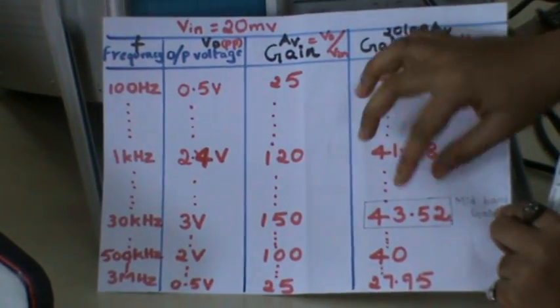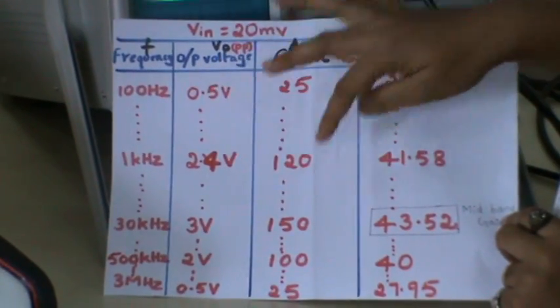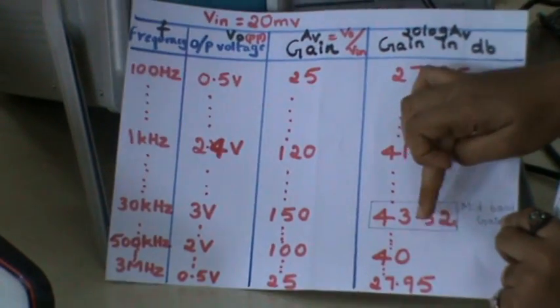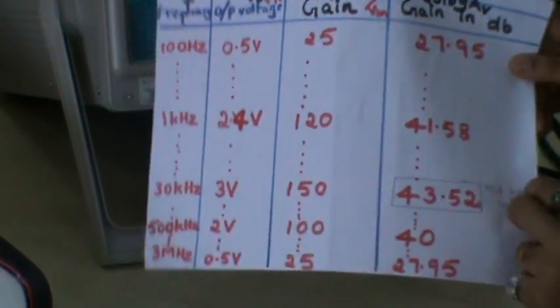From here, the voltage will remain the same at 3 volt. After 30 kilo hertz, the voltage reduces and once again the gain reduces to 27.95.